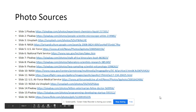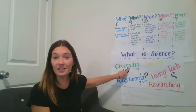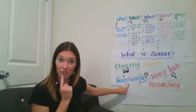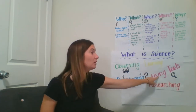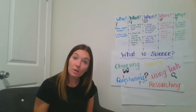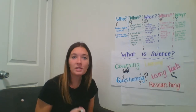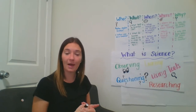Now that we've learned about what science is, let's take a look back at our first anchor chart. Science is observing, learning, questioning, researching, and using tools to complete all of these things. The main part that we're going to focus on today is questioning. What types of questions can we ask so that we have a better understanding for what we're learning about?